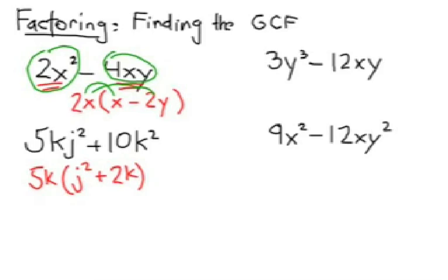Again, to check, use the distributive property. 5k times j squared is 5kj squared, and 5k times 2k is 10k squared. So those are your factored results.